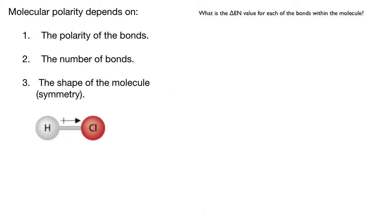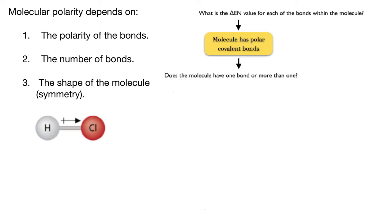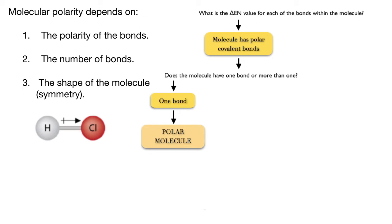Now let's take a look at hydrogen chloride. The bonds between hydrogen and chlorine are polar. So now we look at number two on the list: the number of bonds. There is only one bond. If there is a single bond in the molecule and that single bond is polar, then the molecule is polar. In this particular case, we have a polar molecule with a positive end — hydrogen — and a negative end — chlorine. So hydrogen chloride is a polar molecule.